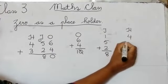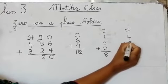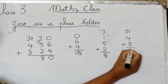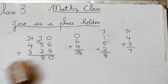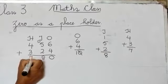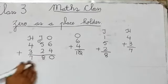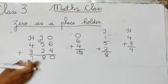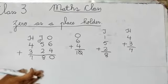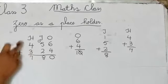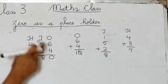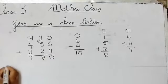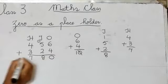4 plus 3. 4 plus 3 is 7. So the answer is 780. Or if we say the place value: 700, 8 tens, and 0 ones.